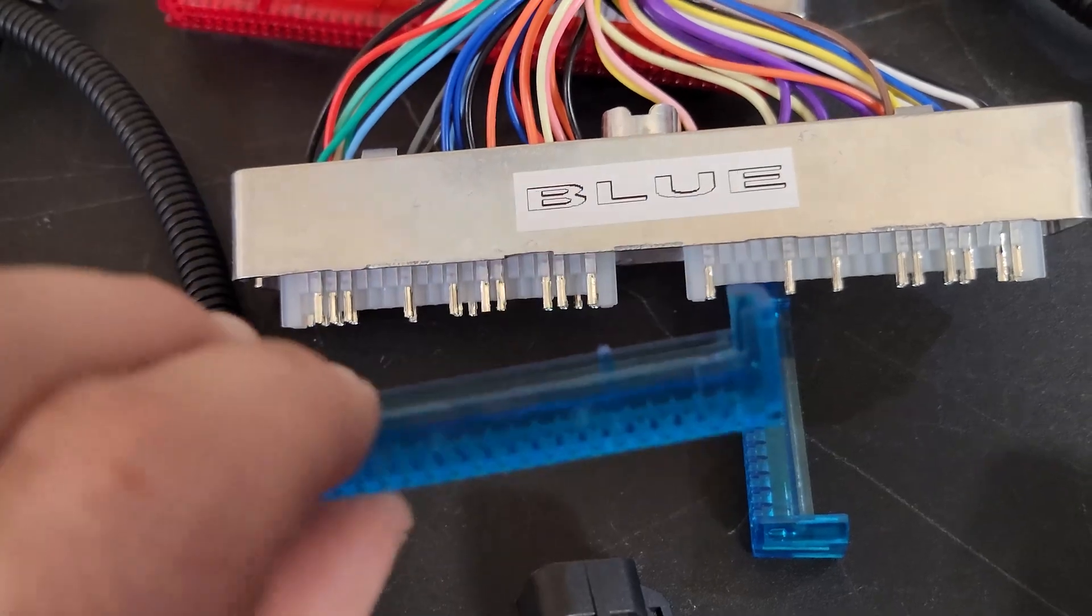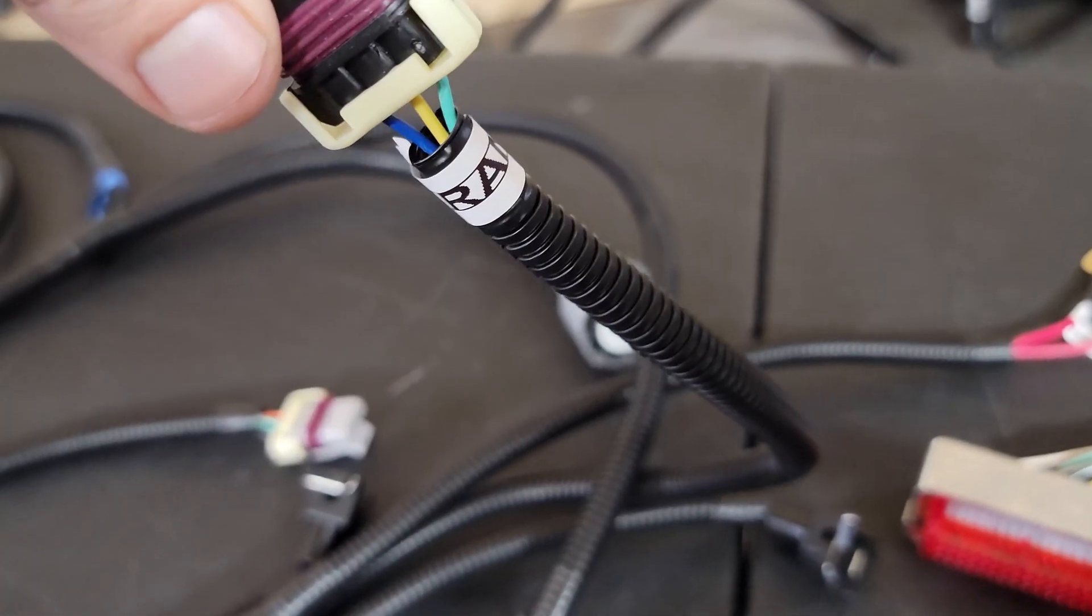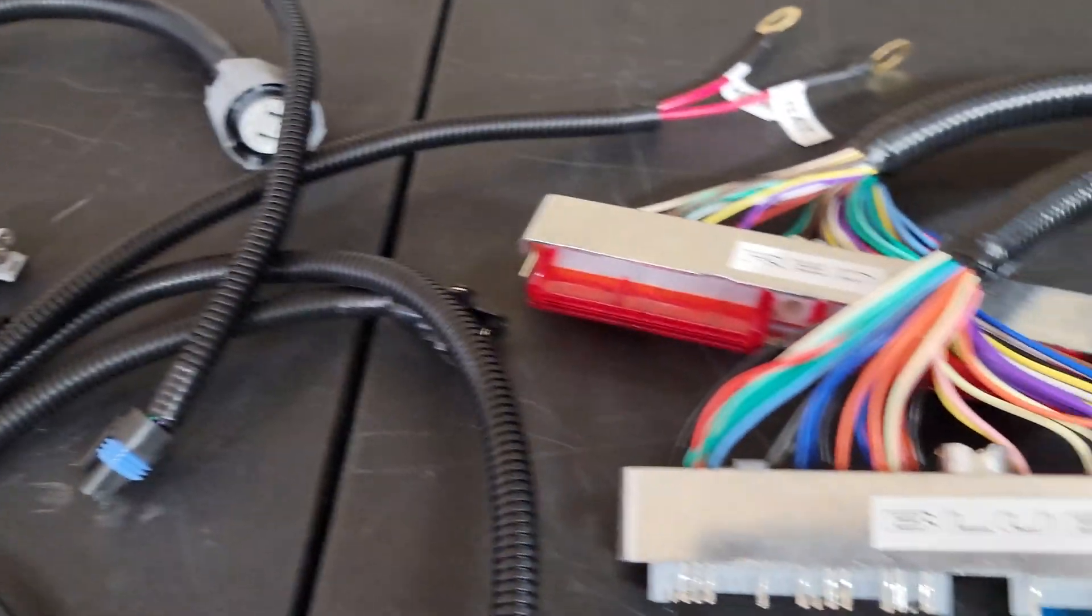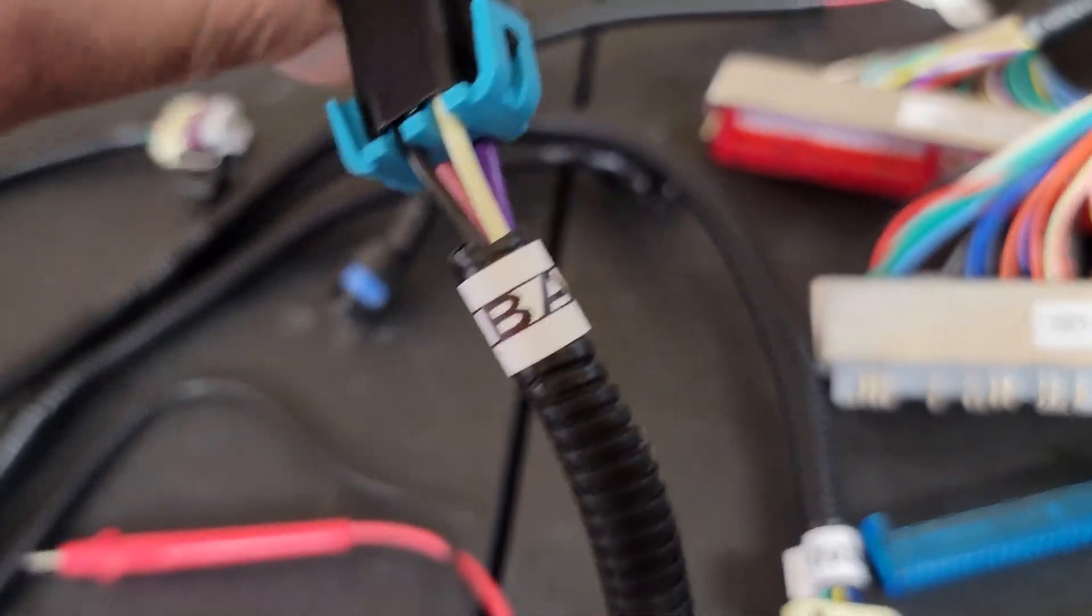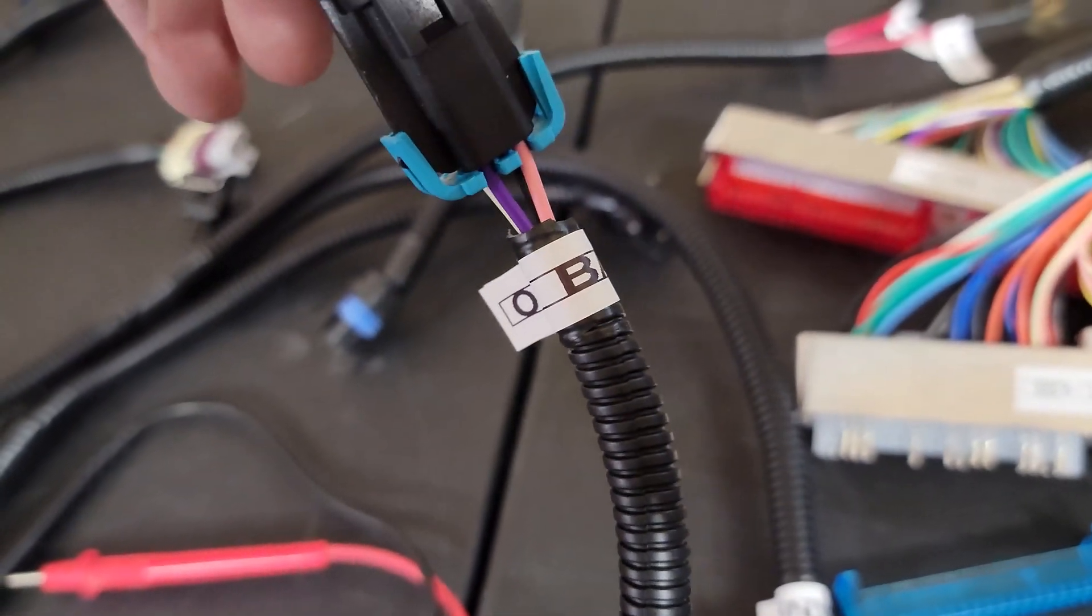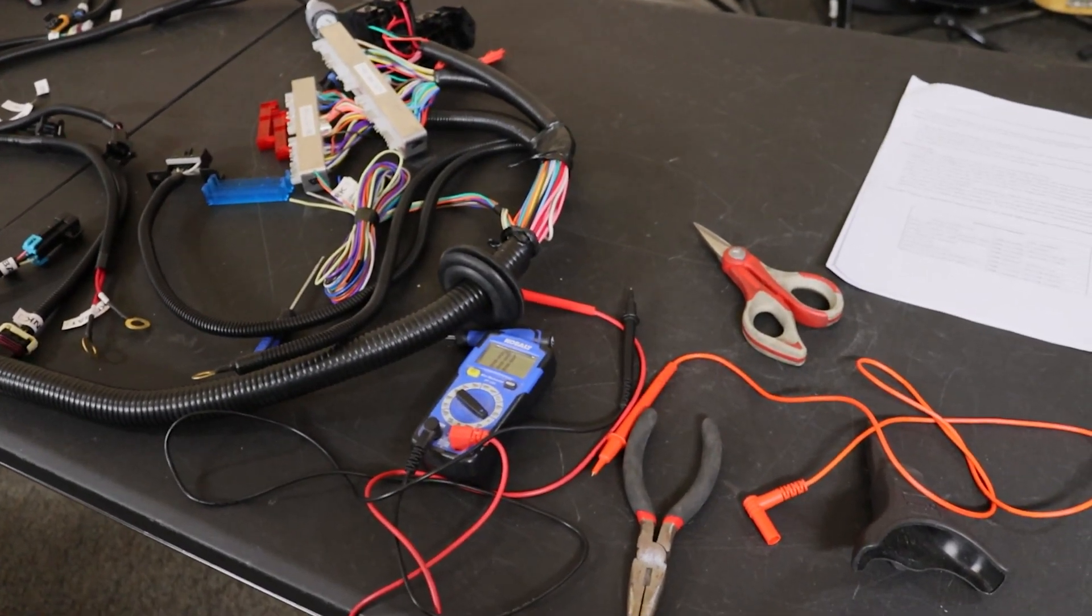And of course for reference we're using lt1swap.com. After each wire is tested that's when the label goes on. Once the label's on that's how we know that the circuit has been tested and is good to go.